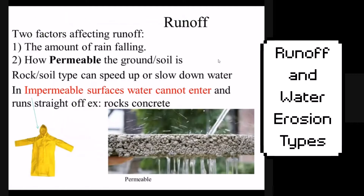Two factors affect runoff initially: the amount of rain that is falling in an area, and how permeable the soil is where that rain is falling. The more permeable the soil, the less runoff you'll have. If the soil is impermeable — for example, like a rain jacket on the left over there — then a lot of water will run off because it cannot soak into the soil. There are other factors that affect runoff as well, other than rainfall amount and soil permeability.